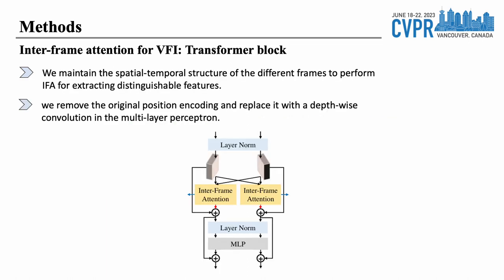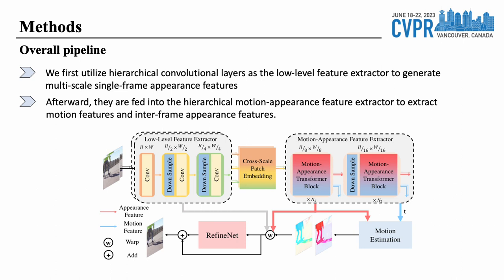We incorporated interframe attention in the transformer block, following the original transformer design but with two changes tailored for the VFI task. Firstly, we maintained the spatial-temporal structure of different frames to conduct interframe attention and extract distinctive features. Secondly, to accommodate varying input frame sizes and enhance interaction between different regions within the same frame, we replaced the original position encoding with a depth-wise convolution in the multilayer perceptron. Since directly using interframe attention on original resolution results in huge memory and computational overhead, we adopt a hybrid architecture: CNN extracts high-resolution low-level features, while transformer blocks equipped with interframe attention extract low-resolution motion and interframe appearance features, achieving efficiency without losing fine-grained information.